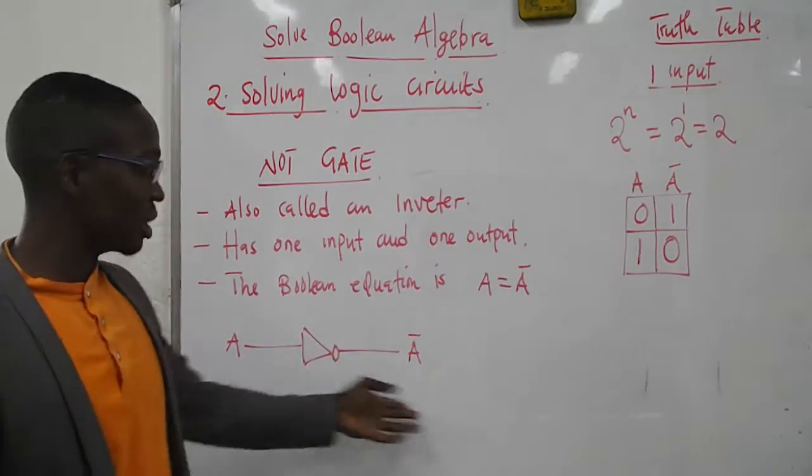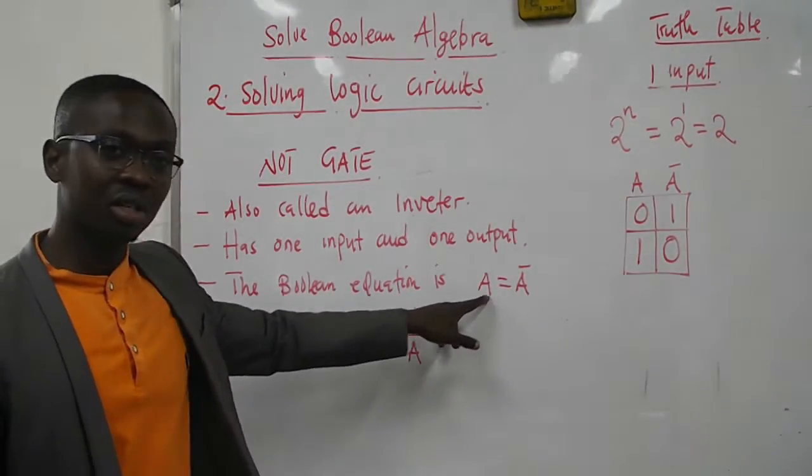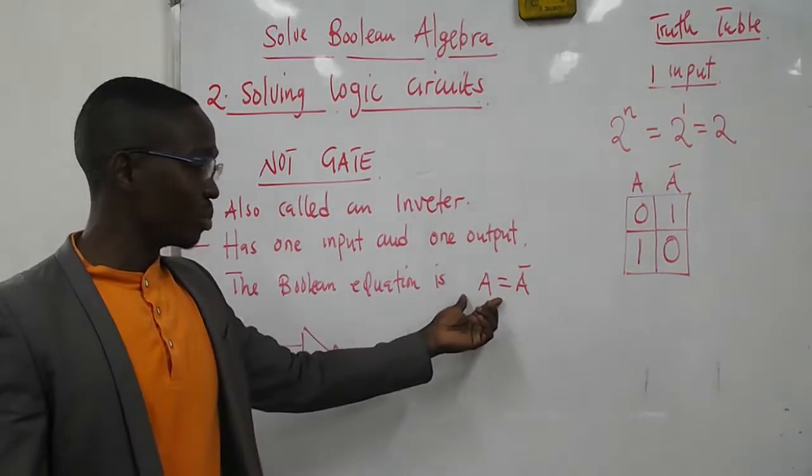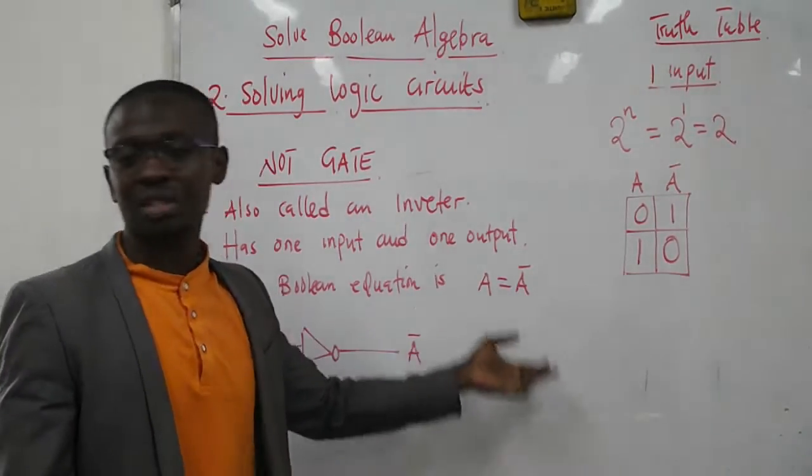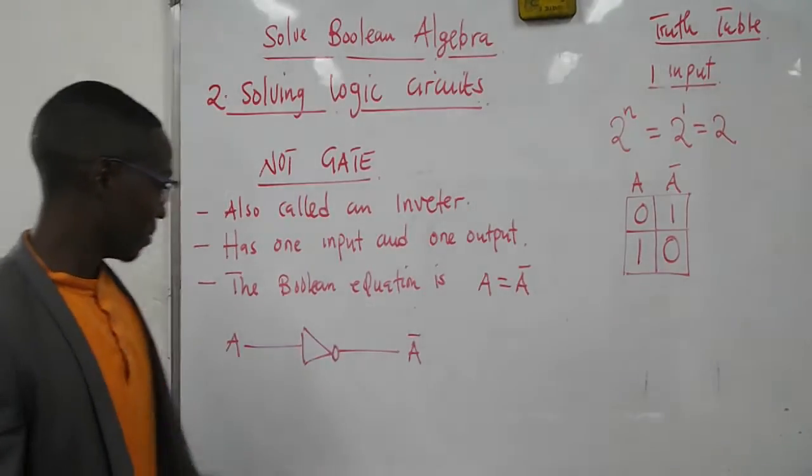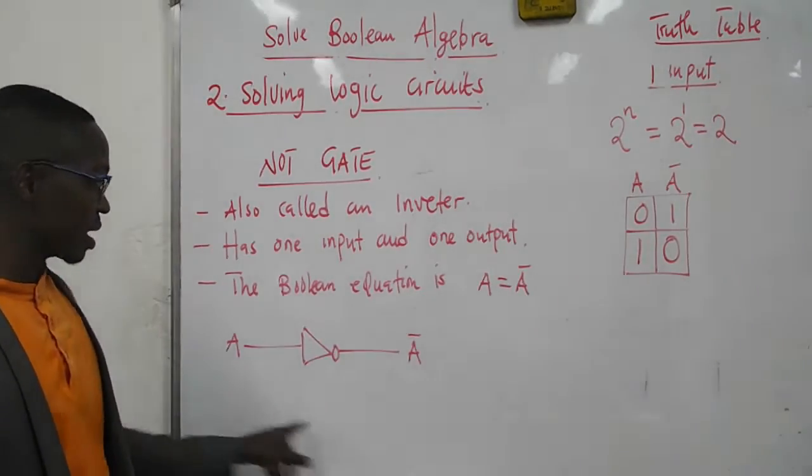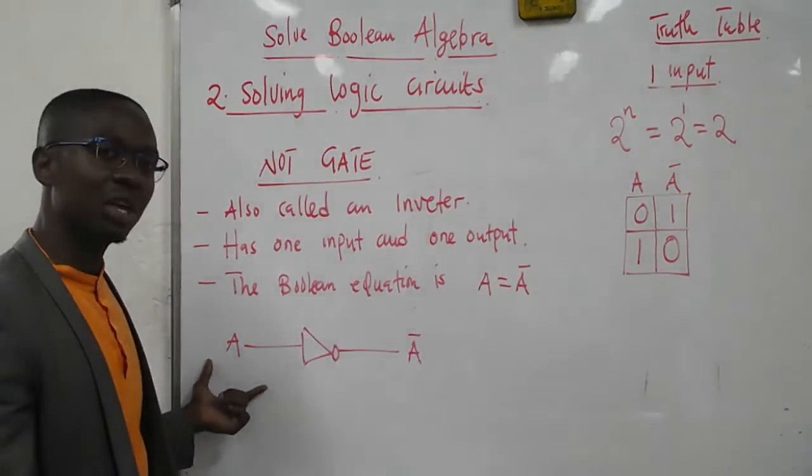It is given by a Boolean equation which is A equals A bar. If the input is A, the output will be A bar. If it's B, the output will be B bar. Meaning if the input is entering there, the output will just be the inversion of the input.